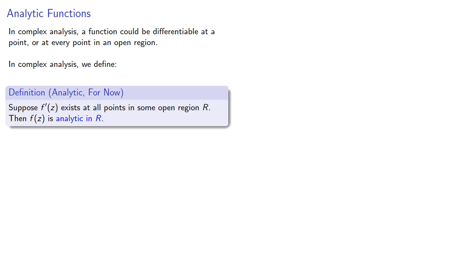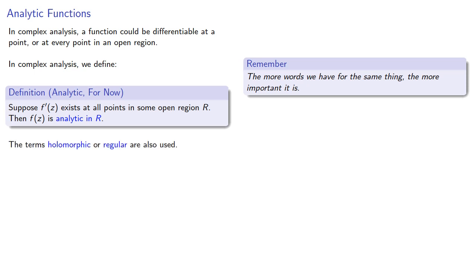Now a useful idea to keep in mind is the more words we have for the same thing, the more important it probably is. So while we'll use the term analytic, we also use the terms holomorphic or regular. And if the open region includes all of the complex plane, we say the function is entire.